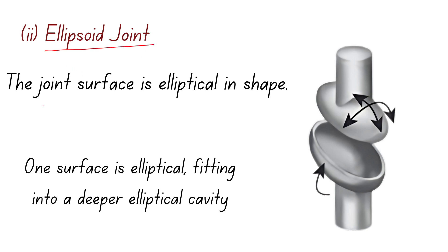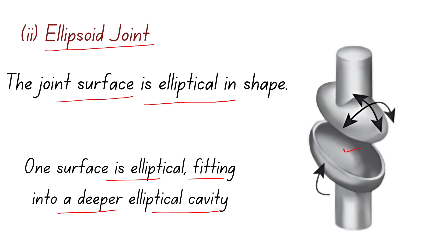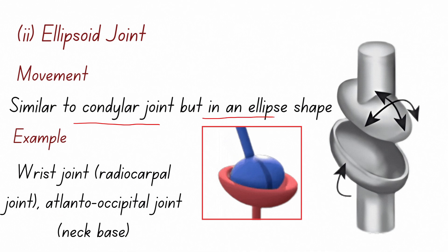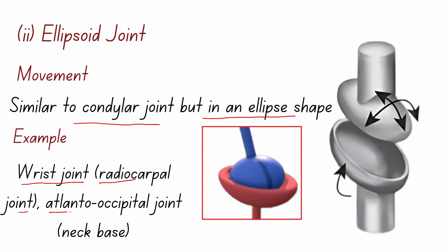In an ellipsoid joint, the joint surface is elliptical in shape — one elliptical surface fits into a deeper elliptical cavity, as seen in the diagram. Movement is similar to a condyloid joint but in an elliptical shape. Examples include the wrist joint (radiocarpal joint) and the atlanto-occipital joint.